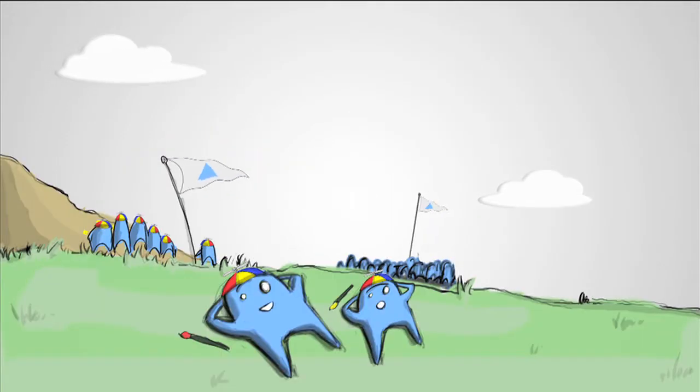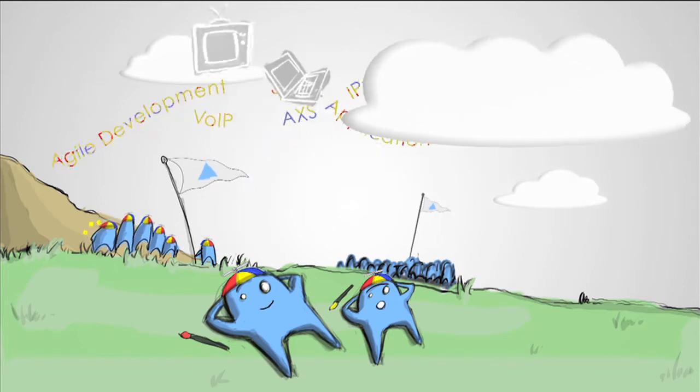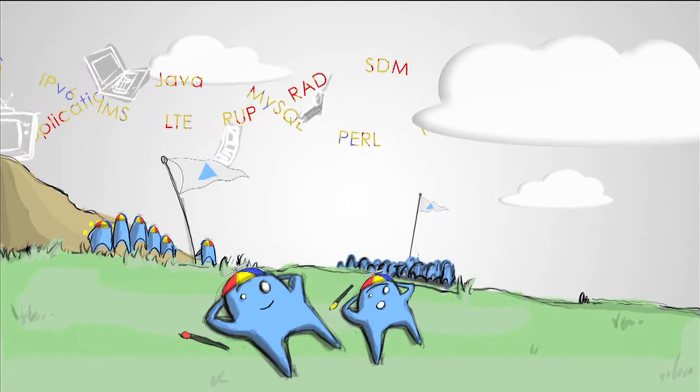The Aplicopians were romantics and dreamt of clouds and 2.0 apps. They used stickies and talked about agile development. They had many languages and many, many acronyms.